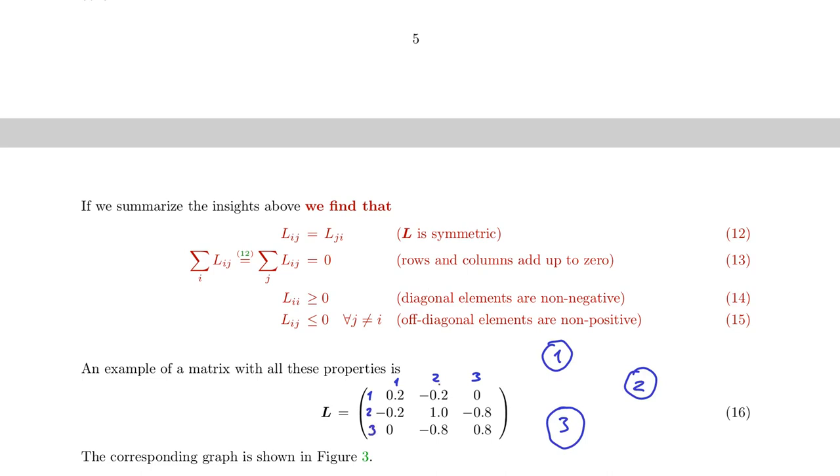And we see that the connection between the nodes number one and two has a strength of 0.2, and this connection has a strength of 0.8. It happens here that the two numbers add up to one, but that's not necessary. This is sort of an accident of this example. So this gives rise to this minus 0.2 here and here, and the minus 0.8 here and here. And then the diagonal elements simply result from taking the sum of these or the sum over this, which is just 0.2.